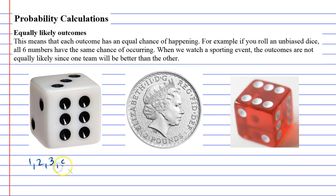Each number has an equally likely chance of occurring because there's only one of each number on the dice. The same for the coin - you've got heads or tails and both of those have an equally likely chance of occurring or happening.